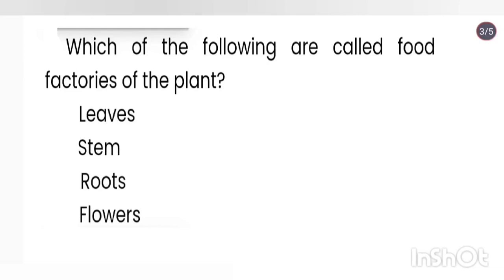Which of the following are called food factories of the plant? Leaves. Leaves are called food factories of the plant because they make food by the process of photosynthesis with the help of raw materials like water and carbon dioxide using sunlight and chlorophyll.